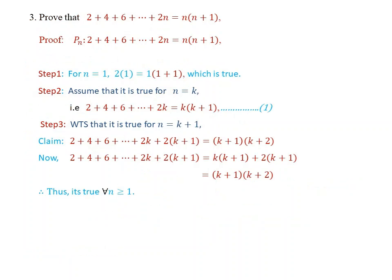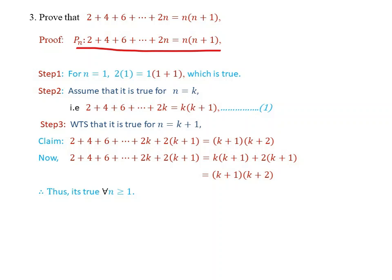Example number 3: Prove that 2 plus 4 plus 6 plus ... plus 2n is equal to n(n+1). The given proposition is: 2 plus 4 plus 6 plus ... plus 2n equals n into (n+1).